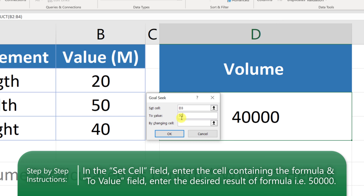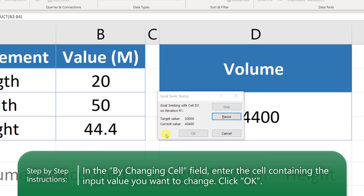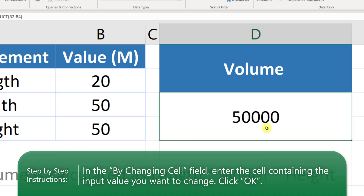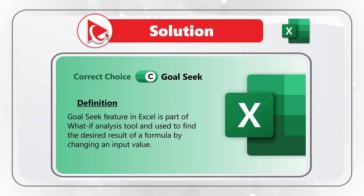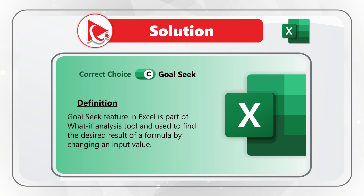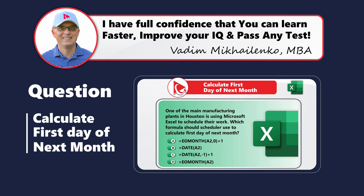We set the By Changing Cell to B4, which is the height. Clicking OK presents the Goal Seek Status dialog box, and clicking OK again shows that the volume was recalculated and the target height is 50. So the correct answer is choice C, Goal Seek. If you know any other Excel features that could help Jeremy, please share in comments.